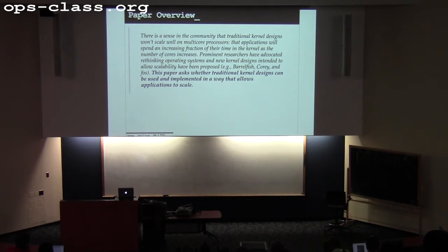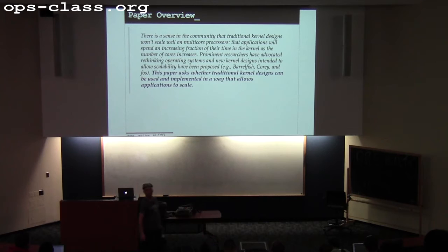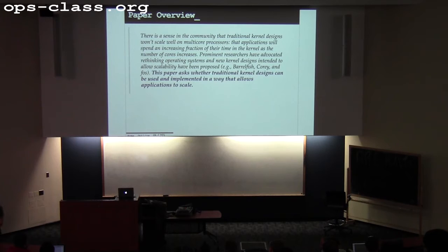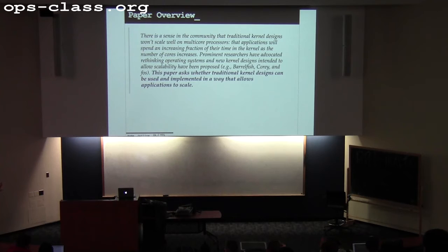The paper's positioning: there's a sense in the community that traditional kernel designs won't scale on multi-core processors, and applications will spend an increasing fraction of their time in the kernel as the number of cores increases. Why is that a problem? From an application perspective, you don't want to be in the kernel — any time spent there is just overhead. If that percentage is growing, more and more of what you're doing is overhead, and that's bad.